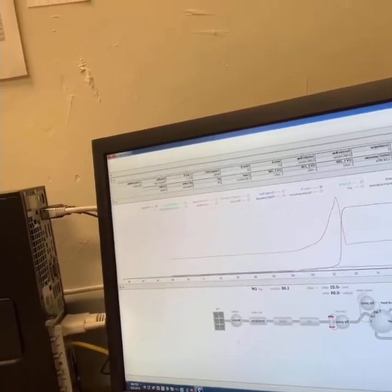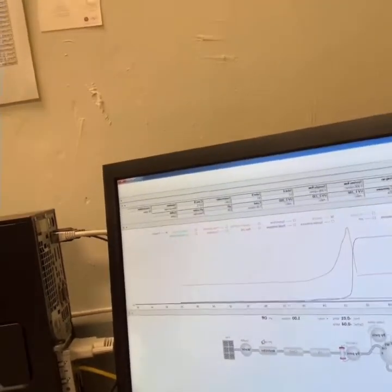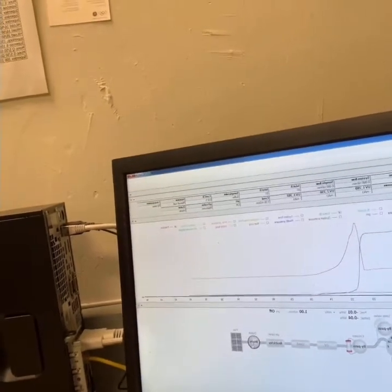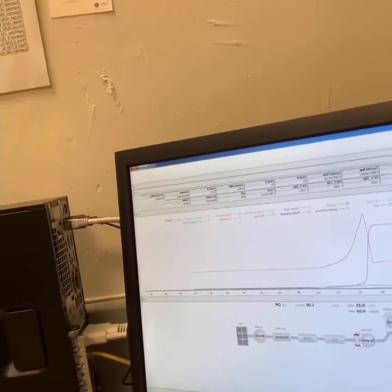Then it goes through a pH sensor and then the outlet. So right now it's just in this wash phase so it's going to the waste, but you can also set it to go to the fraction collector. So let's look at where these things are actually on the ÄKTA.